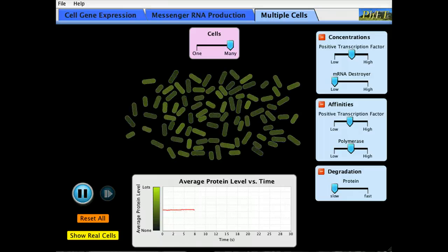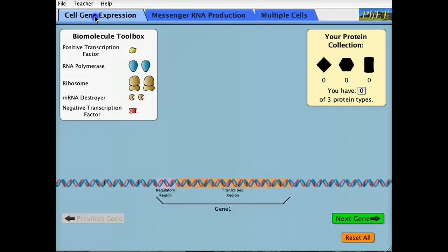Now let's look at what the molecular mechanisms underlying this behavior are. Let's move to the cell gene expression tab. Here's a schematic of a very simple prokaryotic gene with a very simple regulatory region and a transcribed region. We can look at how this gene is regulated. We're going to need to get a positive transcription factor and polymerase bound to the gene in order to begin transcription.